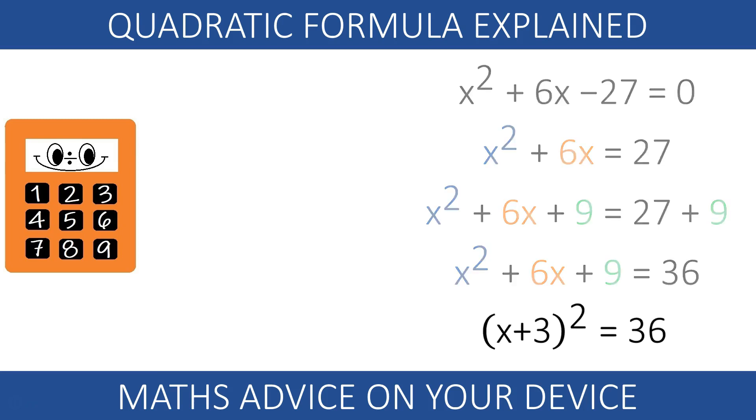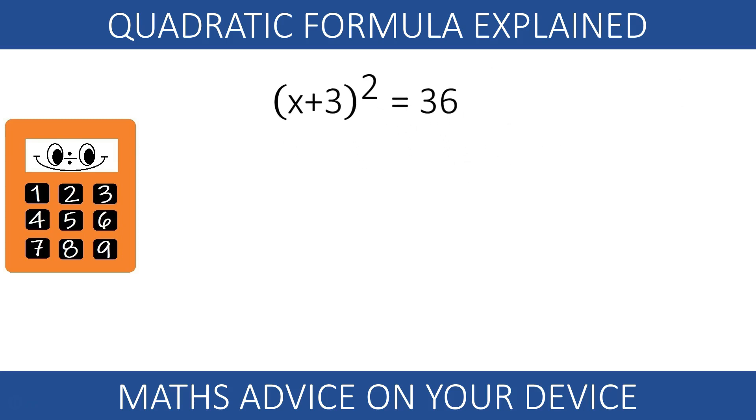This makes it into a perfect square with sides x plus 3. If the area is 36, by taking the square root, we can figure out the length x plus 3 and minus 3 to find x. Using 6 times 6 equals 36, x must be 3. Minus 6 times minus 6 equals 36, so x must be minus 9.